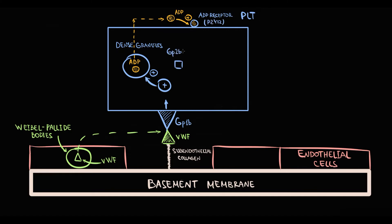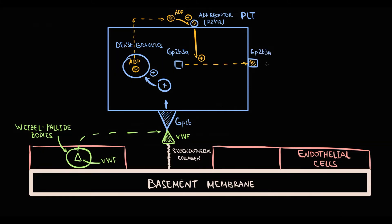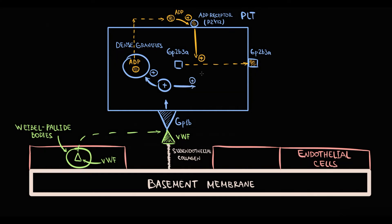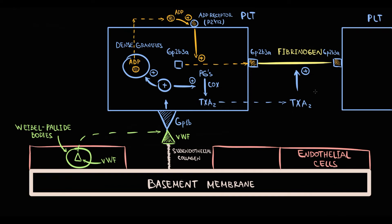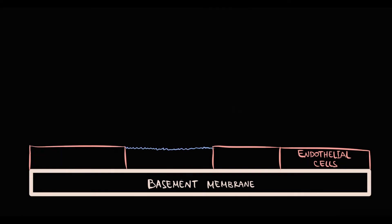Activation of the ADP receptor forces platelets to transport the GP2B3A receptor to the surface, where GP2B3A serves as a binding site for fibrinogen. In addition, platelets begin to produce Thromboxane A2 from prostaglandins, and the function of Thromboxane A2 is to promote aggregation. When fibrinogen encounters a GP2B3A receptor on the platelet surface, it binds to GP2B3A, and when another platelet comes to the site of injury, it also binds via GP2B3A to fibrinogen. This process, significantly accelerated by Thromboxane A2, occurs over and over again until a platelet plug is formed — this gathering of platelets is called aggregation.